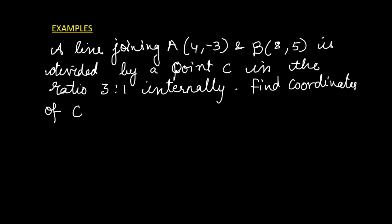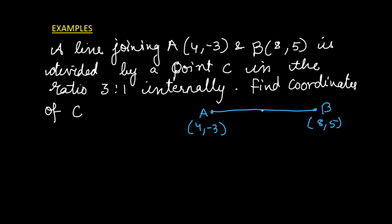Let us quickly draw line AB. The coordinates of A are (4, -3) and the coordinates of B are (8, 5). Point C is dividing it in the ratio 3 is to 1. Let the coordinates of C be x and y. We need to find the value of x and the value of y.